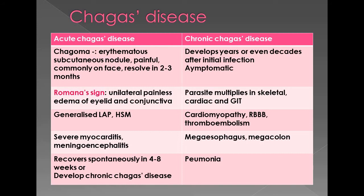Chagas disease can present in acute and chronic forms. At the site of the bug bite, there is an erythematous subcutaneous nodule called Chagoma. A characteristic sign in acute Chagas disease is Romana's sign, which is unilateral painless edema of the eyelid and conjunctiva. Along with that, there is generalized lymphadenopathy, hepatosplenomegaly — enlargement of the liver and spleen — and severe myocarditis and meningoencephalitis.